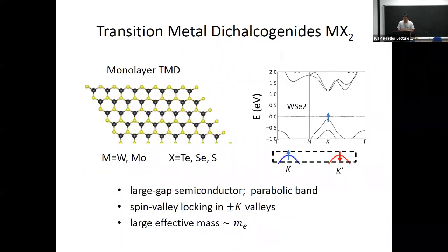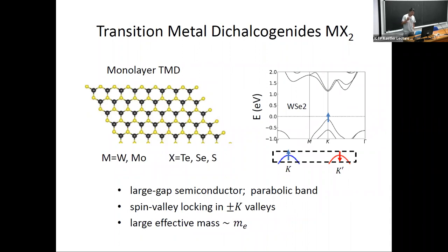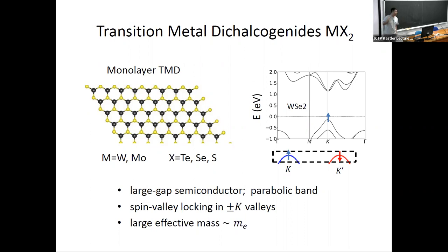Let me give some basic information about these TMD systems. A monolayer TMD such as MX₂ is a large-gap semiconductor, and near the band edge the dispersion is simply parabolic. We deal with for example hole-doped WSe₂. The relevant states are near the band edge, located at both K and K' points, degenerate and related by time-reversal symmetry. Because of spin-orbit coupling there's a spin splitting, so at a given valley the spin is polarized, and the two valleys have opposite spin polarization due to time-reversal.